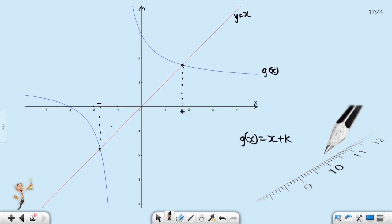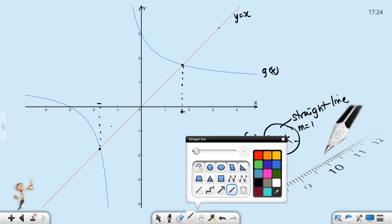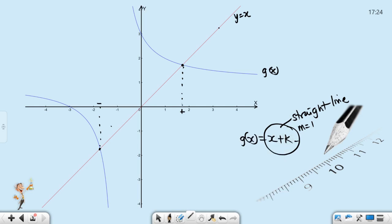But the examiner now says that g of x is equal to x plus k. If I study this equation very well, that is a straight line. Straight line. And my gradient is one. It means that this line must be parallel to my y equals x.